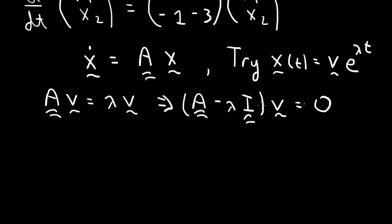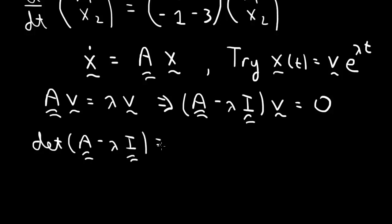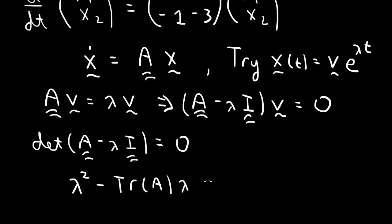This equation is used to determine the eigenvector. For the matrix times v equal to 0 to have a non-trivial solution, we must have the determinant of (A minus lambda I) equal to 0 — this is the characteristic equation of matrix A. For the 2×2 case, this can be written as lambda squared minus the trace of A times lambda plus the determinant of A equals 0.